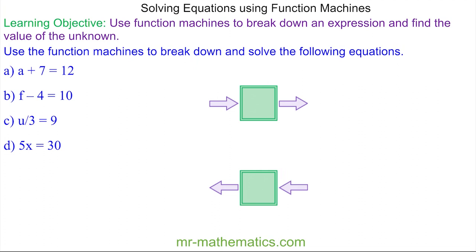For question a, we're trying to find a, and the equation is a + 7 = 12. So a is what goes into our machine, the function is we're adding 7 to it, and then we get 12 coming out. To solve this equation we're going to work the problem backwards — 12 is now going into our machine, and because we're going in the opposite direction we do the opposite of add 7, which is take away 7.